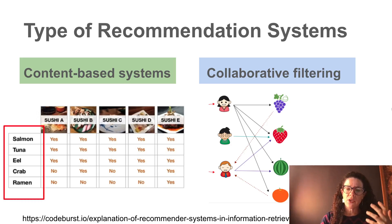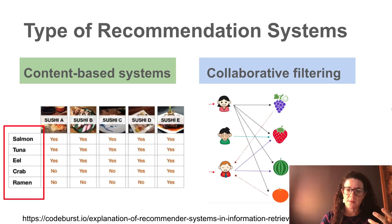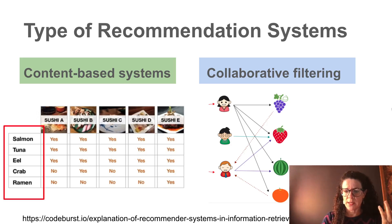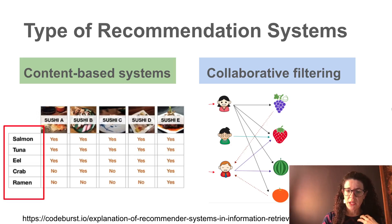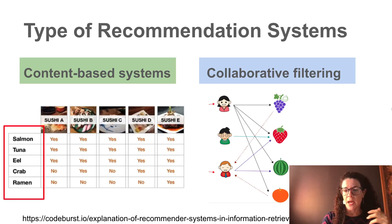Notice that the content-based system has not used data about any other user — it has only used data about my previous purchase history. In collaborative filtering, by contrast, we use data about all users. For example, suppose you are Amazon in the US — you take all users and find those who are similar to me, then recommend items based on what those similar users liked.